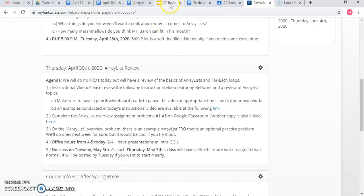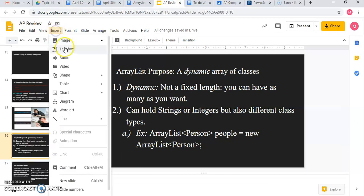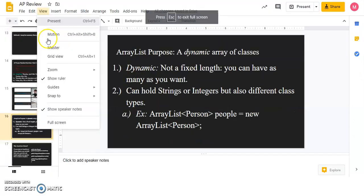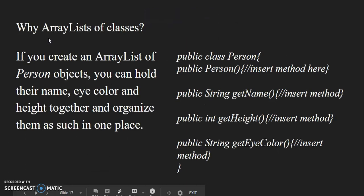So please get a pencil or a whiteboard out. We've talked about why array lists. Let's take a look at how maybe this works. If you create an array list of person objects, rather than just having an array list of simple values like integers, you can hold an array list of things that are more complicated to make and organize them.